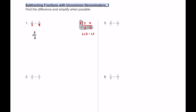So we take two-thirds minus one-fourth and ask how do we make them both twelfths. The three multiplies by four and the four multiplies by three — those diagonals. Three times four gives twelve, two times four gives eight on top; and one times three gives three on top. So we have eight minus three, which is five, giving us five-twelfths.